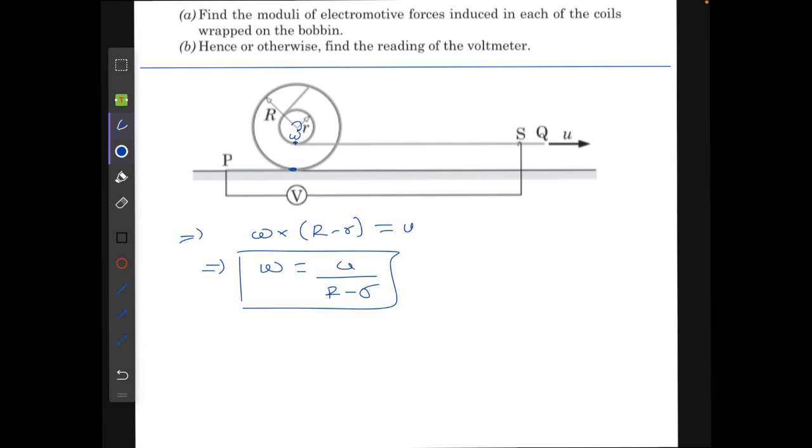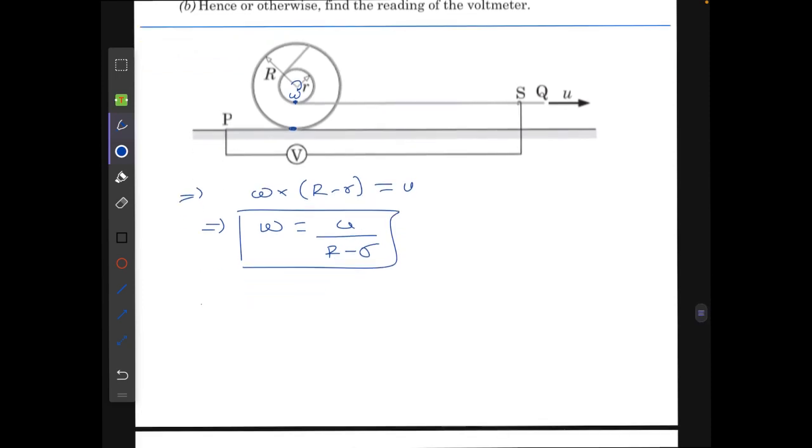This is written assuming this is the instantaneous center of rotation and I have written the velocity of this point on the bobbin. Let's say the flux through the outer sphere or the outer cylinder phi outer will be equals to B times pi R square